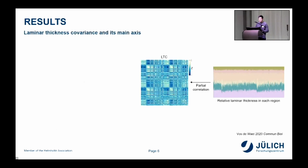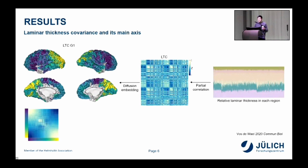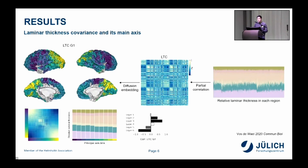We used this to create a laminar thickness covariance matrix, which shows how similar the laminar thickness pattern is between two given regions. To better understand the structure underlying this matrix, we used a diffusion embedding technique to get the main axis of laminar thickness variation in the cortex. You can see this map here — it describes a rostral-caudal axis of variation in laminar thickness, showing a transition from dominance of deeper layers in more rostral frontal parts of the cortex towards dominance of more superficial layers towards the posterior regions.